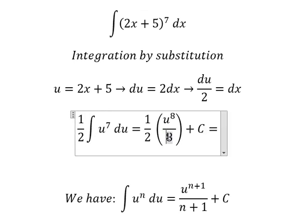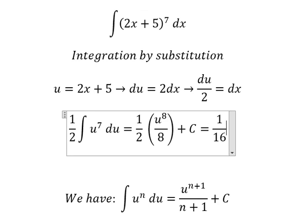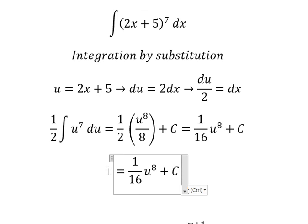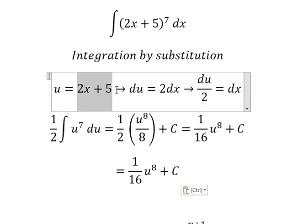Eight times two gives us 16. So u is substituted back as 2x + 5, giving us 1 over 16 times (2x + 5) to the power of 8 plus C.